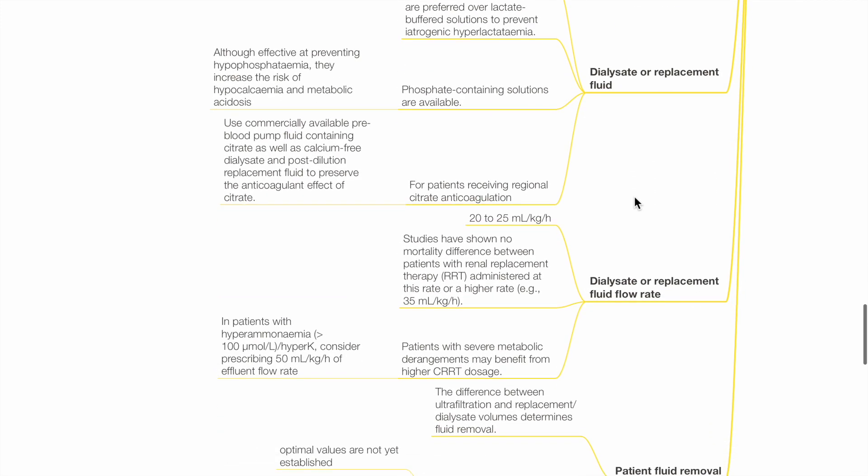Dialysate or replacement fluid flow rate is 20 to 25 mLs per kg per hour. Patients with severe metabolic derangements may benefit from higher CRRT dosage, such as in hyperammonemia or hyperkalemia. However, studies have shown no mortality difference between patients with low or higher dialysate replacement fluid flow rate.